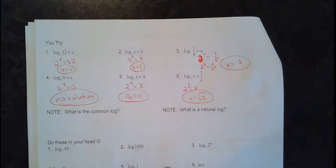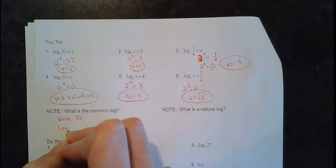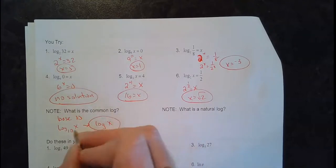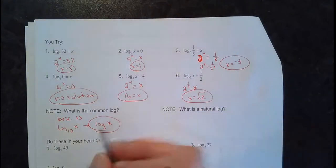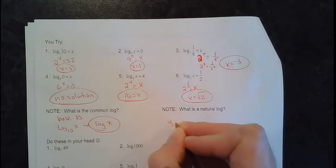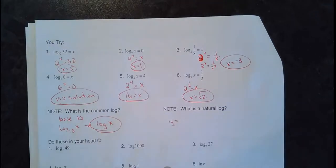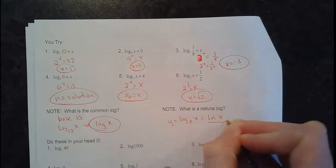Common log and natural log: there were certain logarithms used so much they got tired of writing them, so they gave them special names. A common log is a logarithm with base 10. Instead of writing log base 10 of x, they just write log x. If there's no base written, it is 10. Then there's another base they used so much they called it the natural log - written as ln. When you see log base e of x, they just call it natural log of x, meaning the base is e.